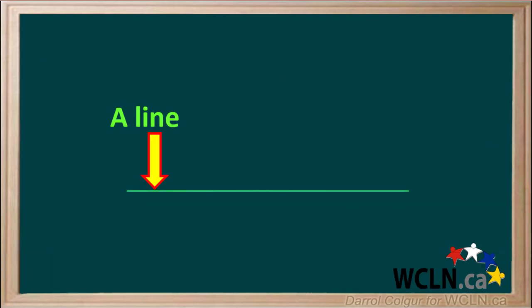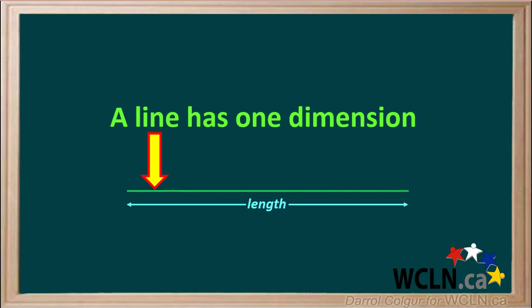Let's draw a green line. A line has only one dimension, and that is length. Because it has one dimension, we can also call it 1D.